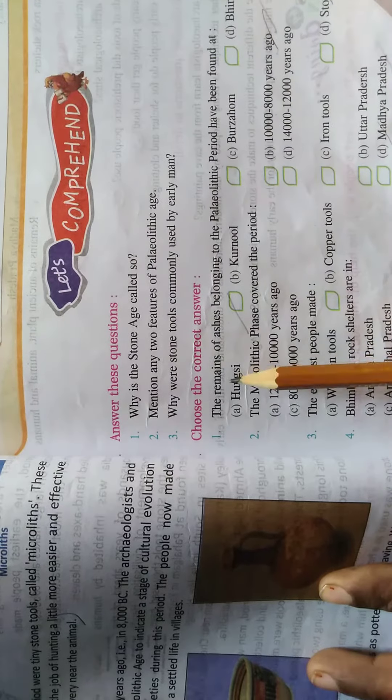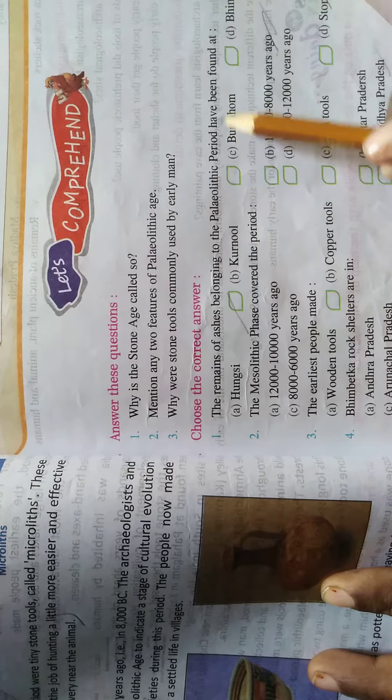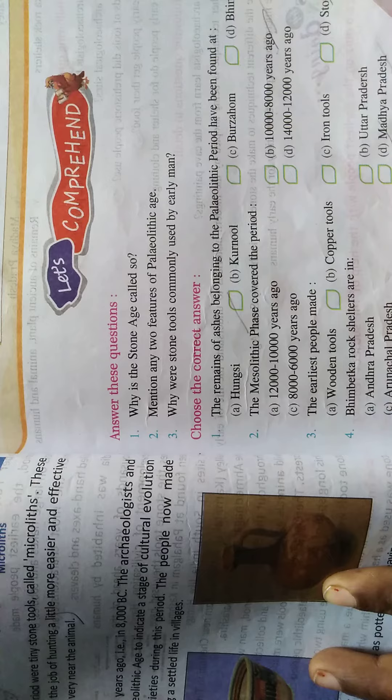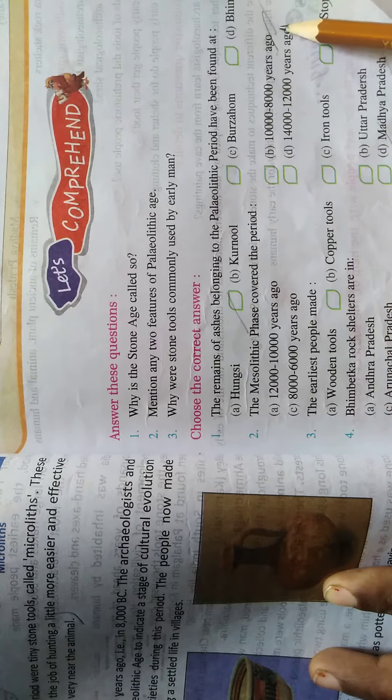First, the remains of ashes belonging to the Paleolithic period people have been found at Hansi, first option. And in second, tick the option number B, 10,000 to 8,000 years ago.